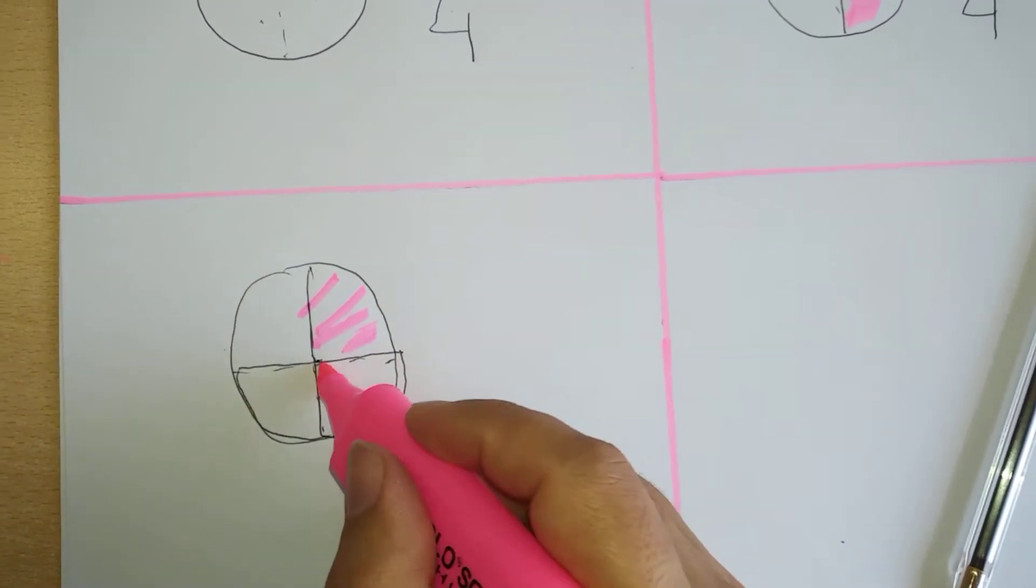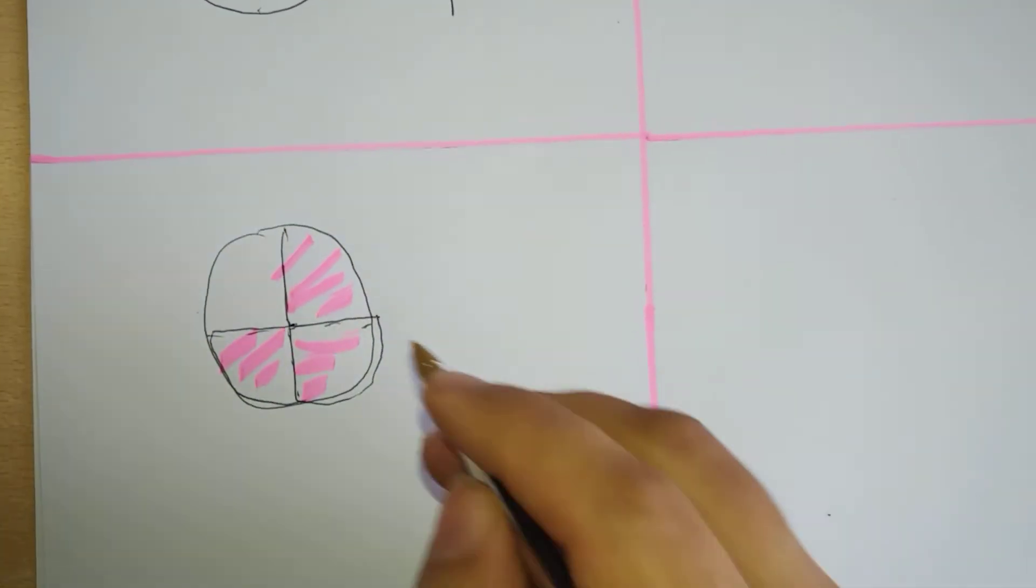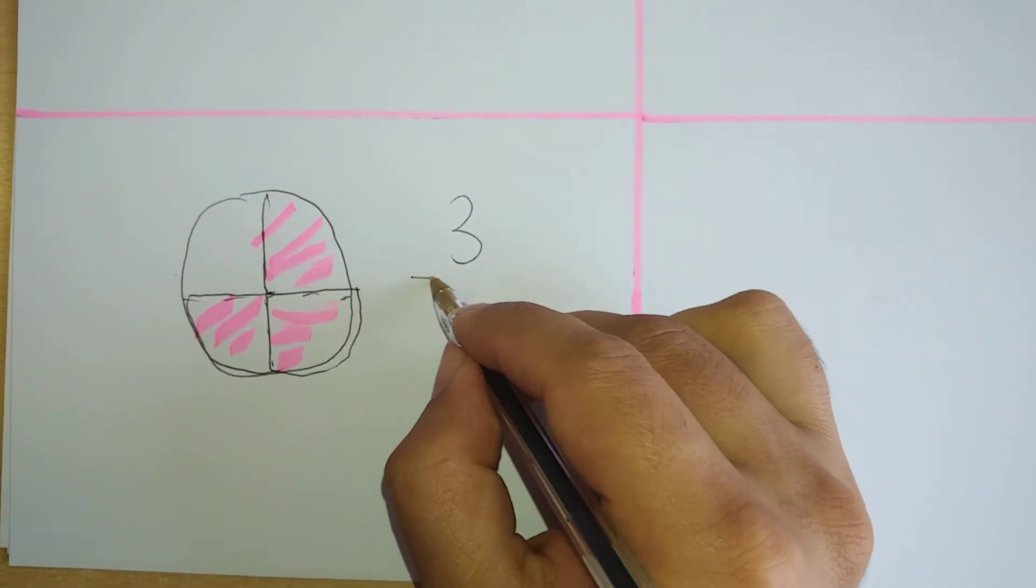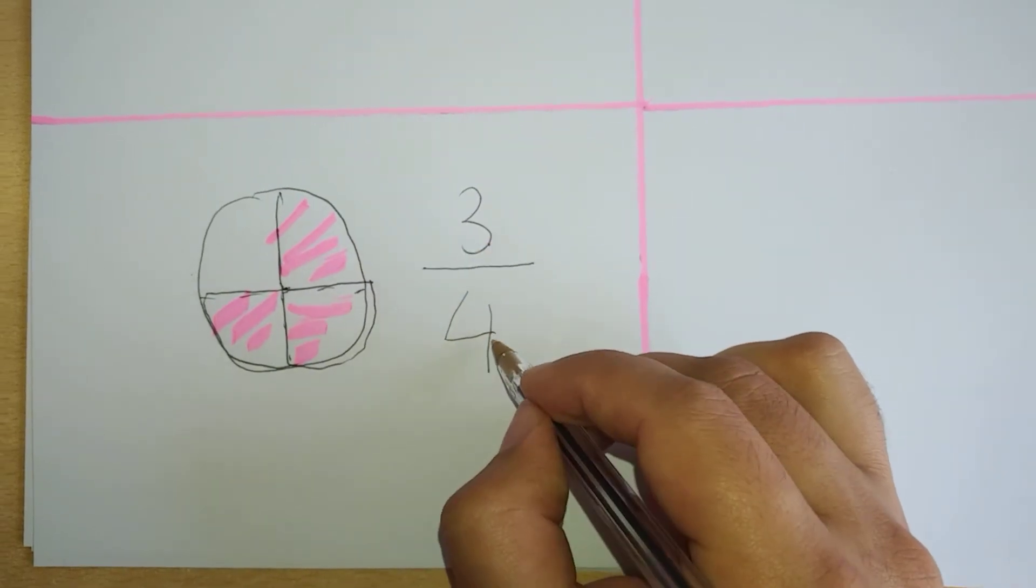One quarter, two quarters, and three quarters. Which will be written as three over four. Three quarters.